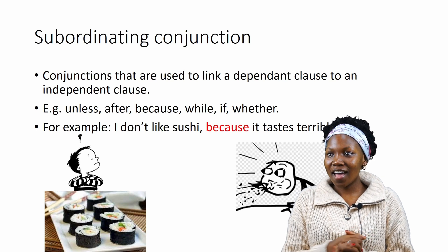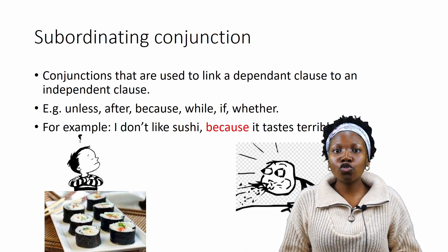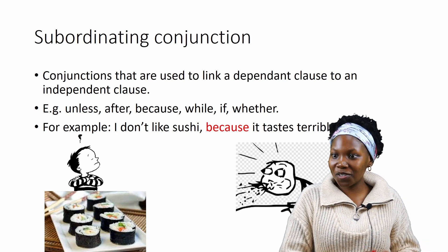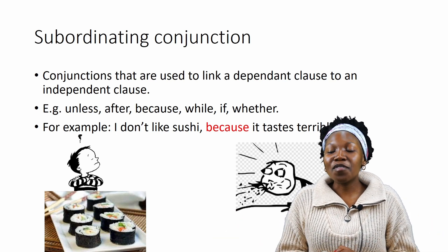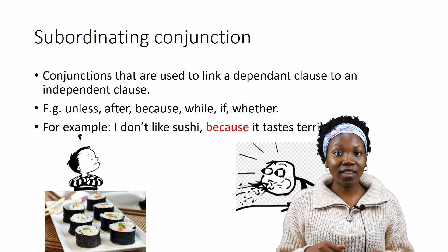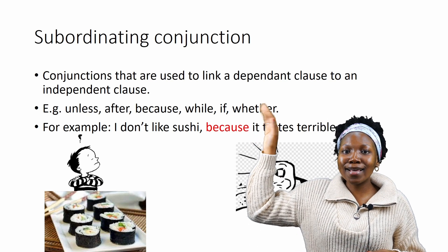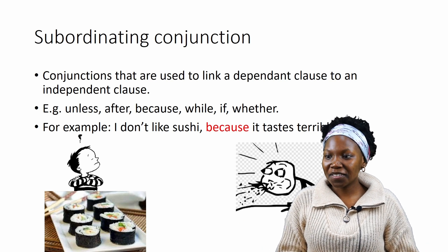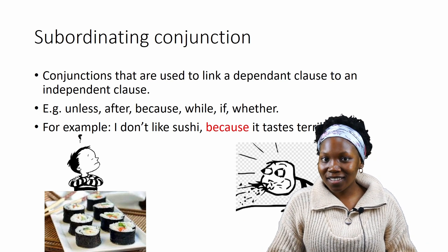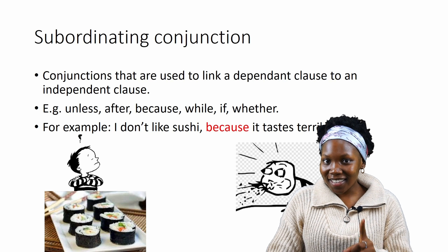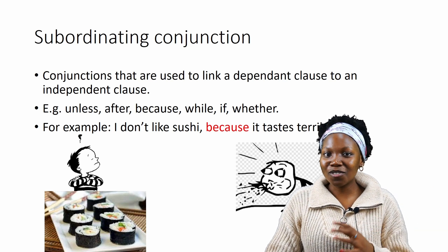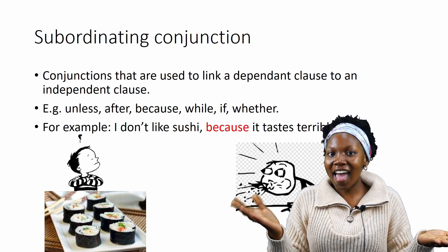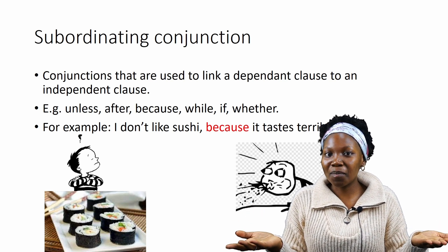Subordinating conjunctions. These conjunctions are used to link the dependent clause to the main clause. These vary from: unless, after, because, while, if, whether — and the list is endless. For example, 'I don't like sushi because it tastes terrible.' I used the main clause we had at the beginning and the subordinating clause we had at the beginning. If you figured that out, tap yourself on the shoulder because you are smart.